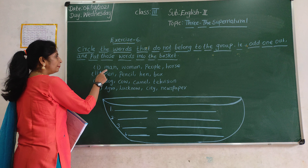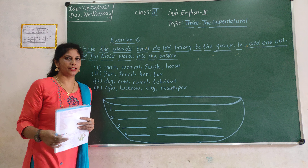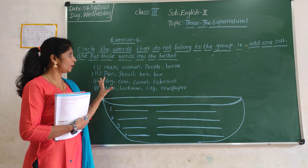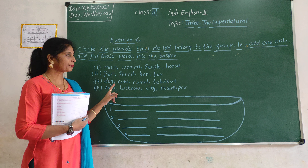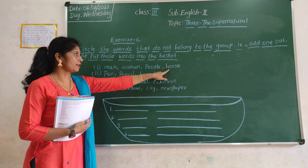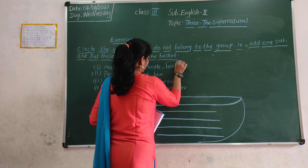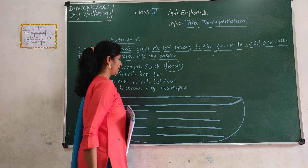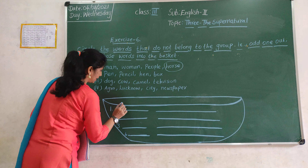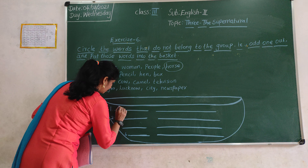Okay children, first one: man, woman, people, horse. Which one is the odd one out, children? Man, woman, people, horse. Horse is the odd one. So horse, you have to write here.